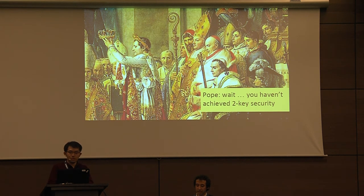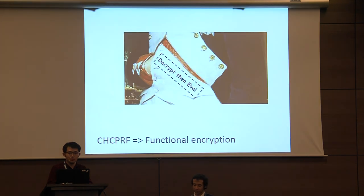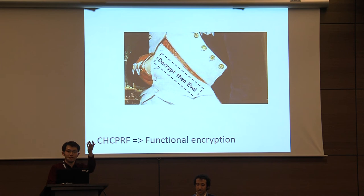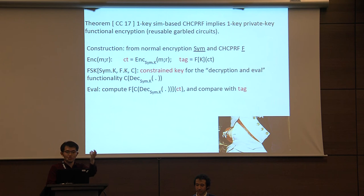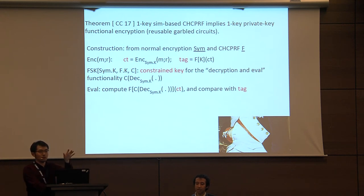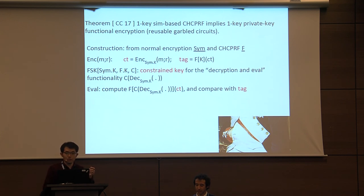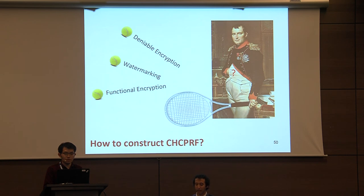In this talk we only achieve one key, so we don't achieve IO in any meaningful sense. But even for one-key CHC PRF you can achieve functional encryption for one key: the ciphertext is an encryption under a symmetric key plus a tag which is the PRF evaluation of the ciphertext, the function decryption key is the constraint key for the decryption-and-eval functionality, and to functionally decrypt you evaluate and compare with the tag.